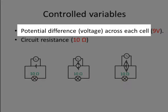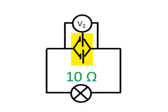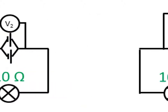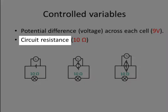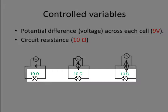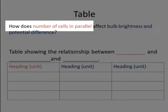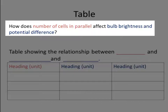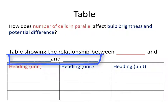We must use the same kinds of cells — each cell must have the same potential difference across it. I've decided to use 9 volt. Here we have a single 9 volt cell, here a battery of two 9 volt cells in parallel, and here three 9 volt cells in parallel. Another controlled variable is the circuit resistance — in each case we have only one bulb with a resistance of 10 ohms. Let's prepare a table for our data with one independent variable and two dependent variables.